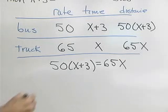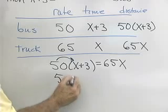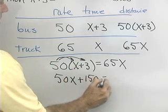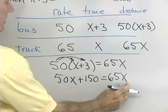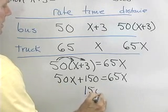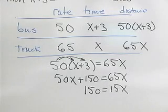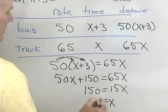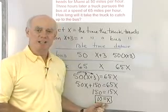Now it's a simple equation to solve. Multiplying out: 50x plus 150 equals 65x. Adding negative 50x to each side gives 150 equals 15x. Dividing both sides by 15, we get x equals 10.